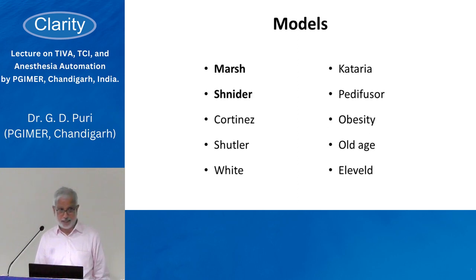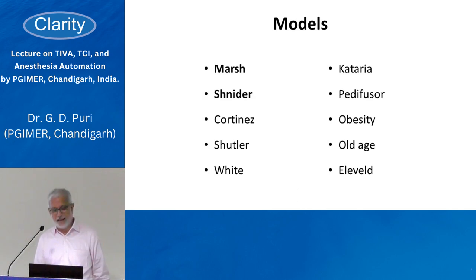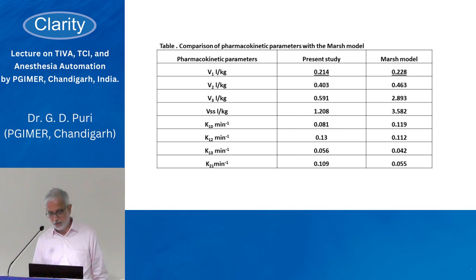We evaluated the deviation of the predicted concentration in our patients and found it was less than 10%, compared to the western models where the deviation was 25 to 30%. So we found our model was good to use. Compared to the Marsh model, our initial volume of distribution was 0.214 liters per kg, while Marsh was slightly more. The time constants were also quite similar.